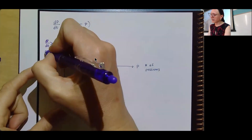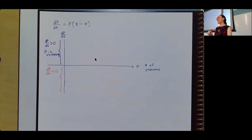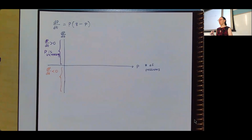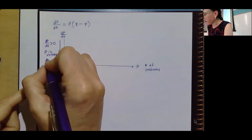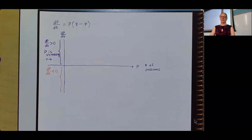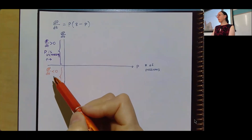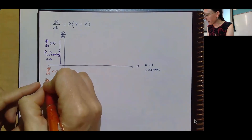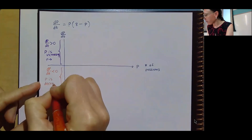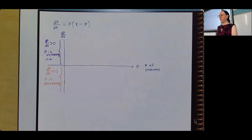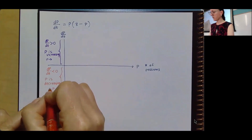Here's the weird part about these axes: if p is increasing, where are the bigger p values — to the left or to the right? To the right. So I'll write: p moves to the right. Conversely, if dp/dt is negative — if my derivative is negative — then p is decreasing, which on my picture means I'm moving to the left.